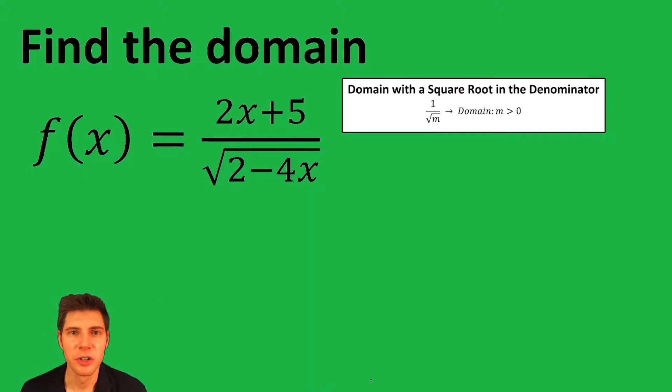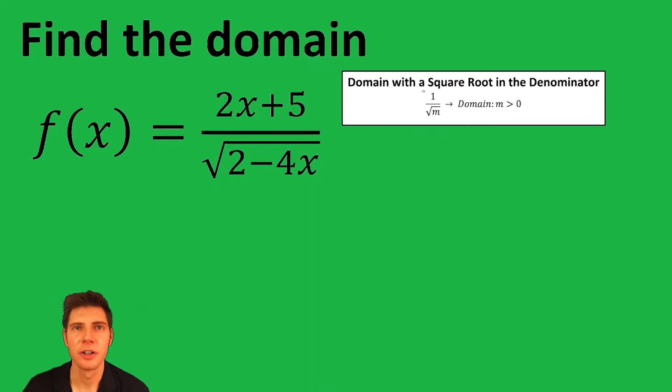So these are the notes for what to do when you have a square root in the denominator. You're going to take whatever is under the square root, in this case 2 minus 4x, and you make it greater than 0.